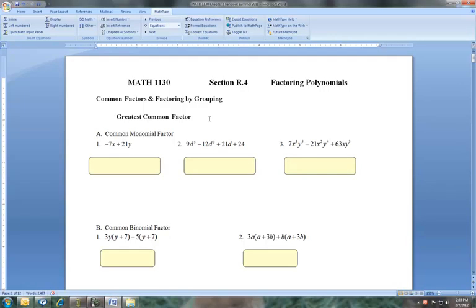First thing, common factors and factoring by grouping. First thing you need to do is understand terminology and know what I'm talking about. This greatest common factor, I've got two kinds. First one we're going to look at is common monomial factor. Common means it's common to all terms. Monomial means a single term. Could be a number, could be number and letter, could be just a letter.